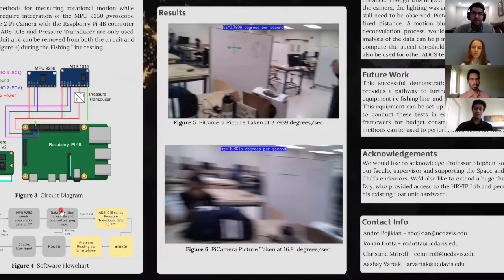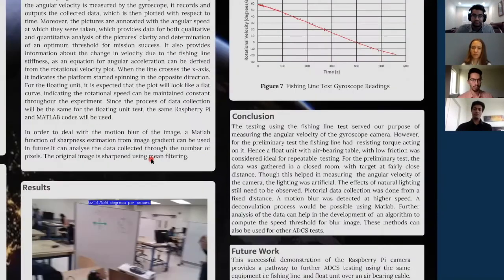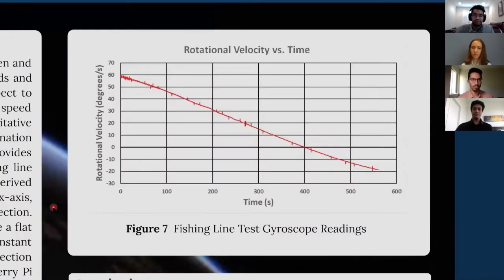Here are some of the pictures that the Raspberry Pi camera was able to take during our fishing line tests. As you can see, as mentioned before, the rotational rate is annotated onto the picture, so this allows us to see large amounts of pictures and qualitatively judge how clear the picture was at each varying rotational rate. As you can see, at around 3.8 degrees per second, the picture is fairly blurry, but at a short distance, parts of the whiteboard here can be seen. But at 16.8 degrees per second, it's much harder to discern what's going on in the picture. There's a lot more blur associated with it.